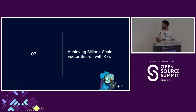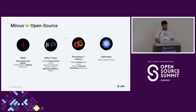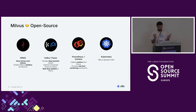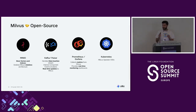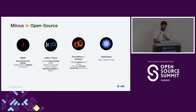So how do we achieve billion-scale on Kubernetes? We're fully using open source. We use MinIO to store our vectors and indexes, which allows us to be fully stateless. We use Kafka or Pulsar to handle data insertion and real-time updates to Milvus — you can query data even before it actually arrives in the index.